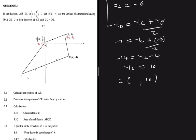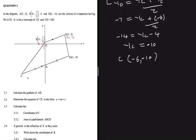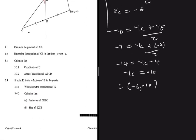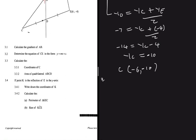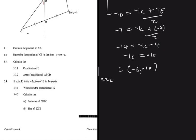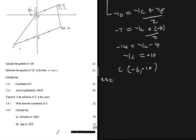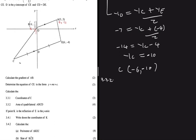So the coordinates of C are (-6, -10). The speaker notes slight surprise at C being in the third quadrant and acknowledges a sign error, then moves on to question 3.3.2: the area of quadrilateral ABCD.